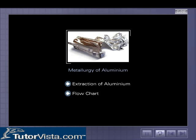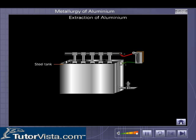Metallurgy of Aluminium. The external view of the electrolytic cell used for reduction of pure alumina is shown here. This cell is called the Hall cell, after US chemist Charles Martin Hall who invented the process.